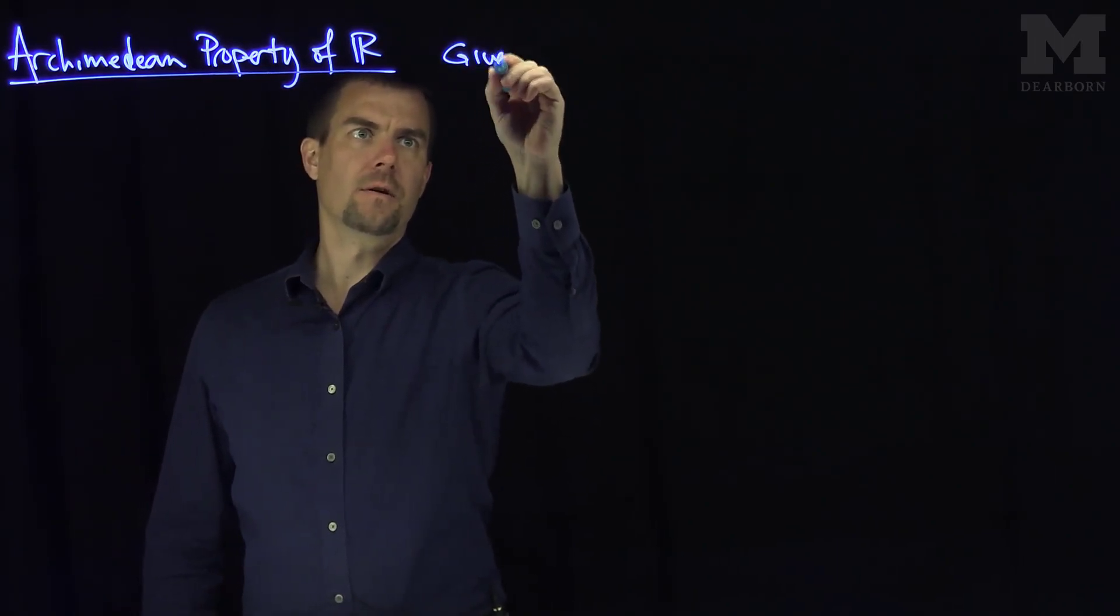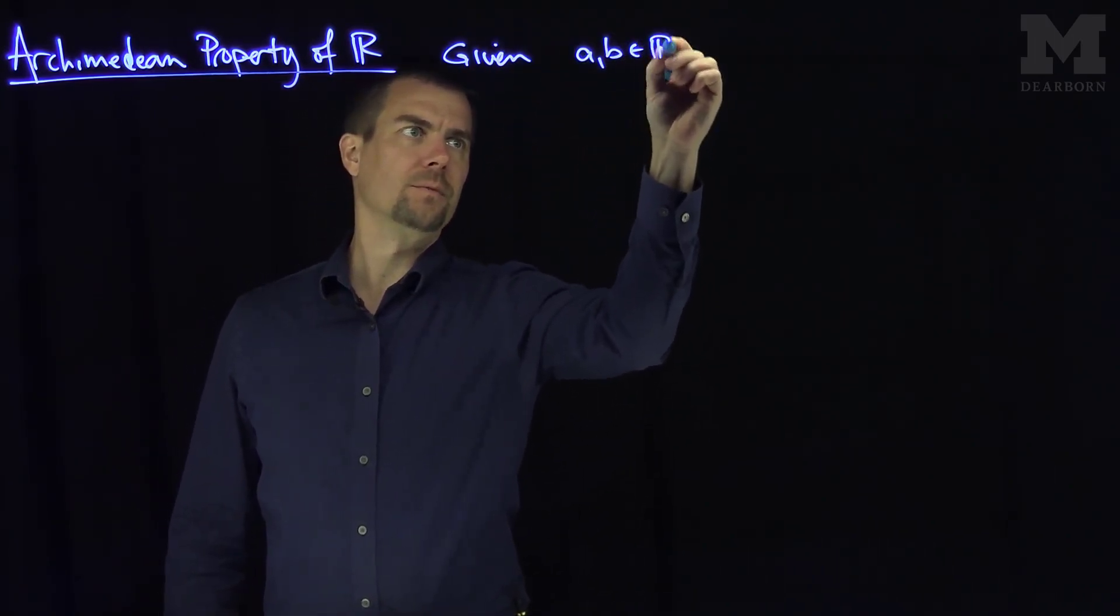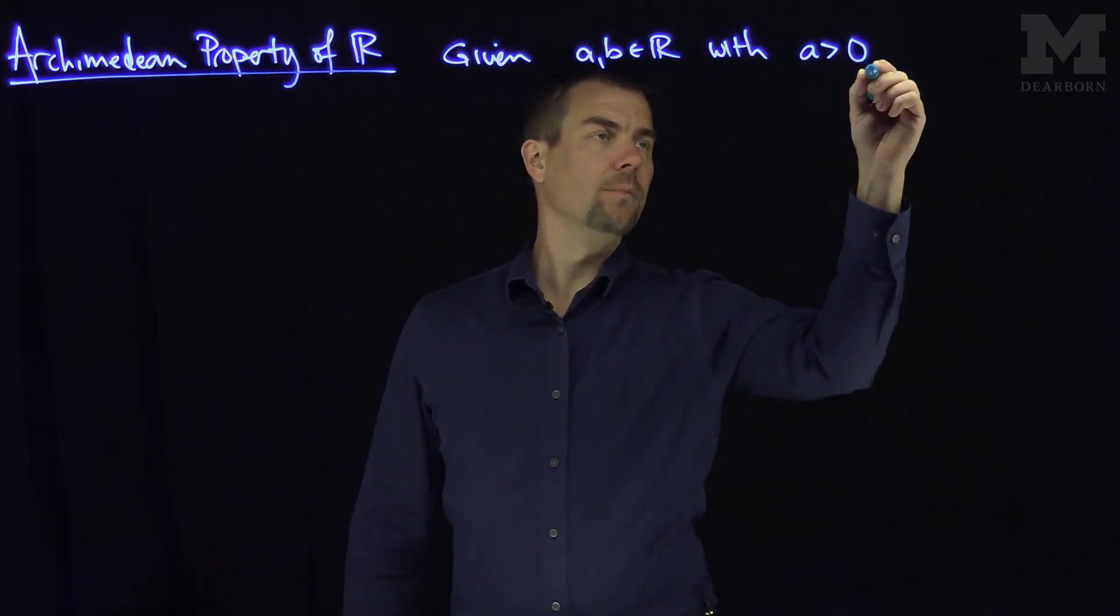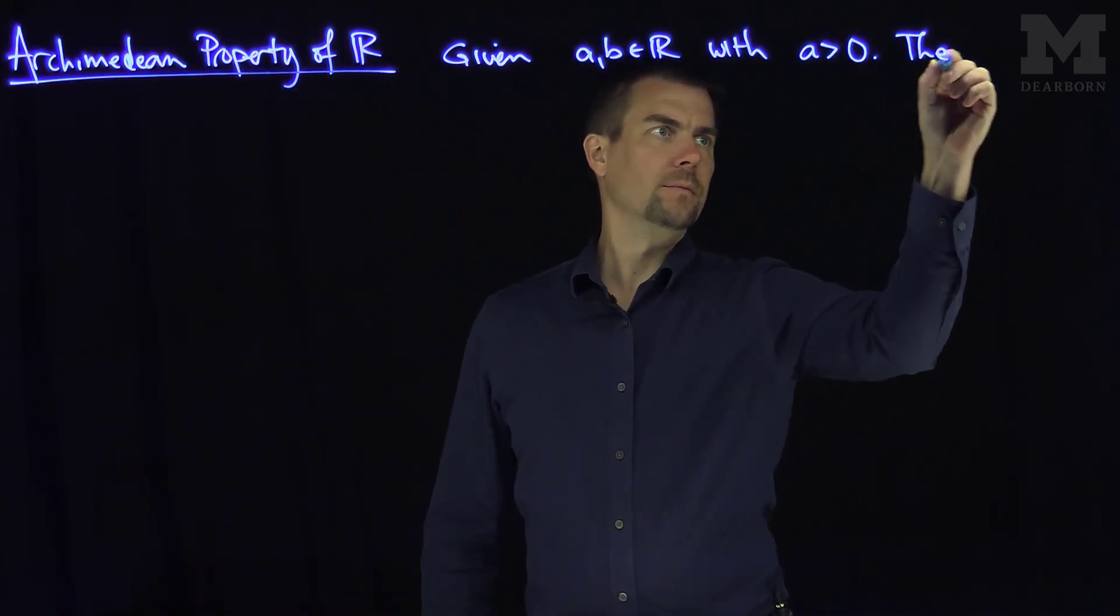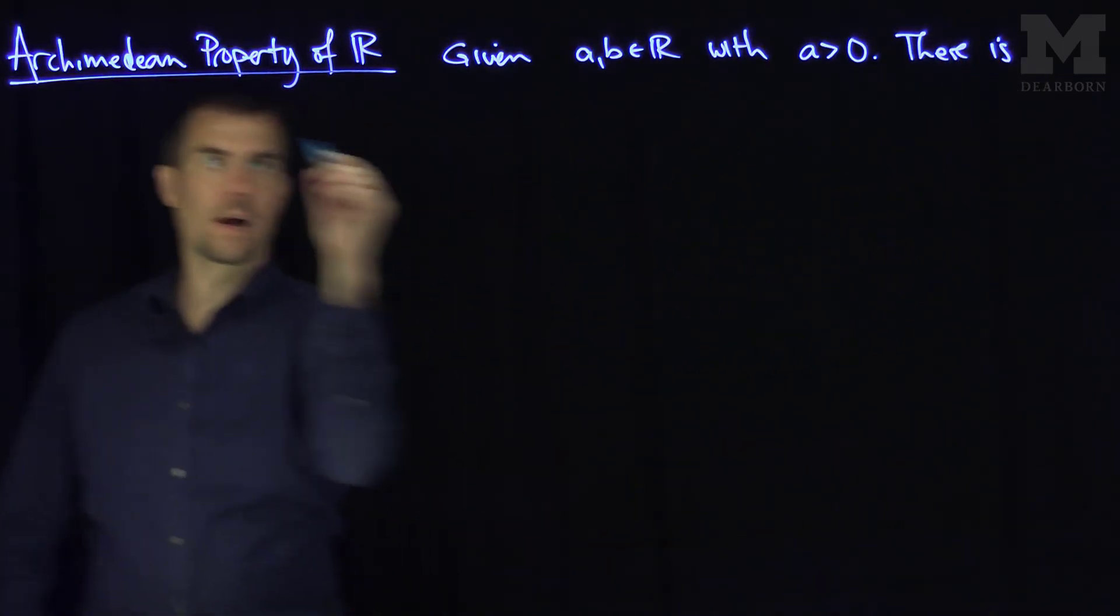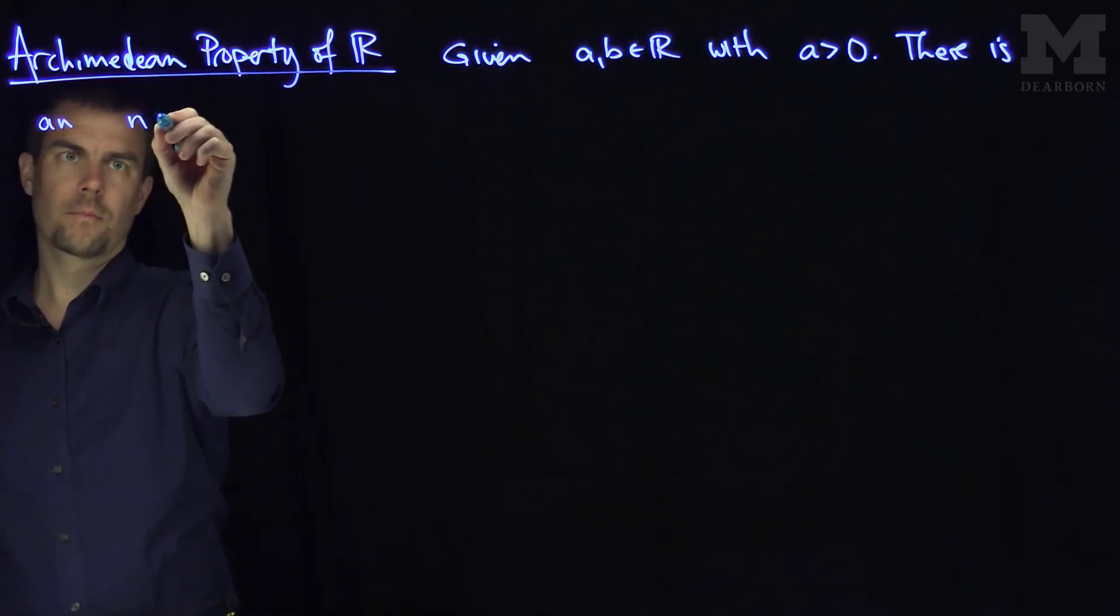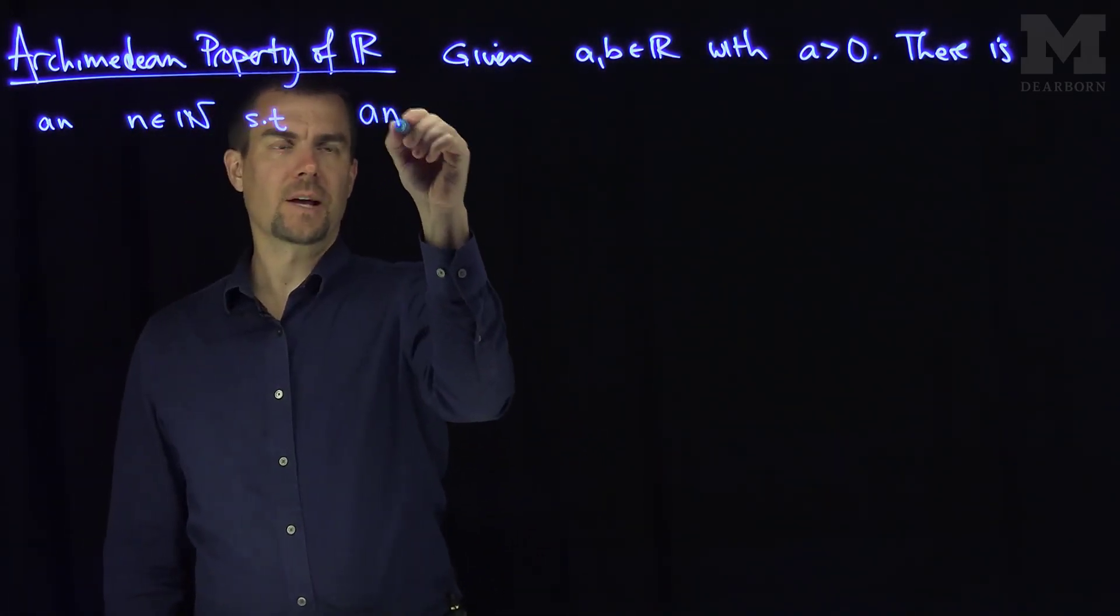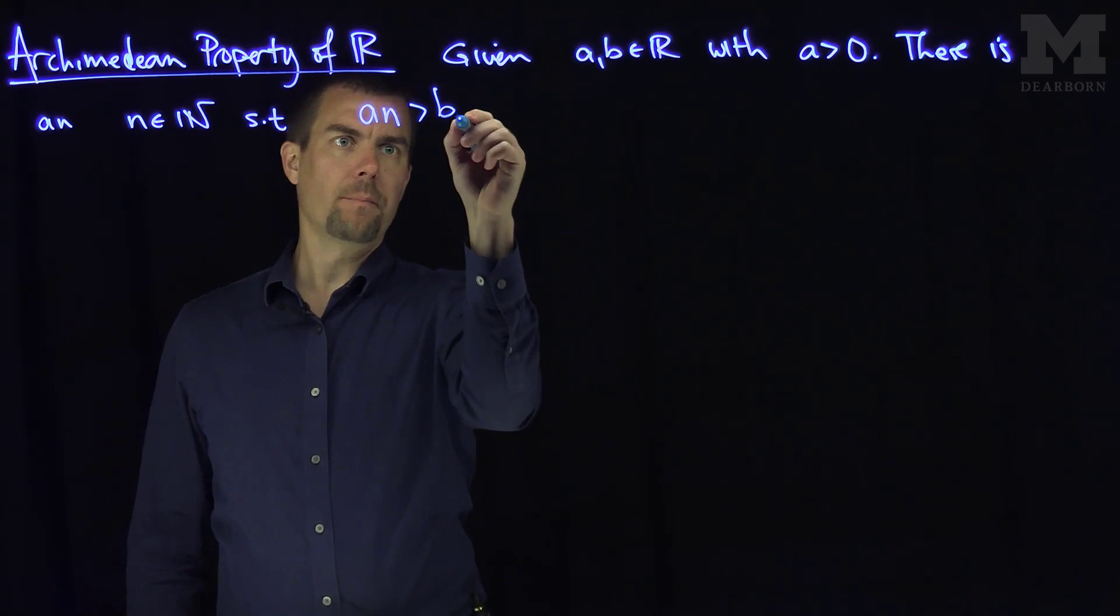It says given a and b real numbers with a greater than zero, there is an n natural number such that a times n is bigger than b.